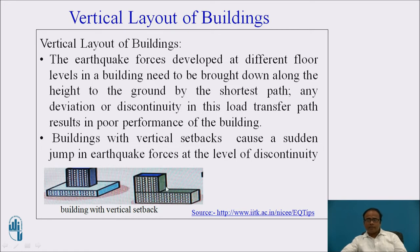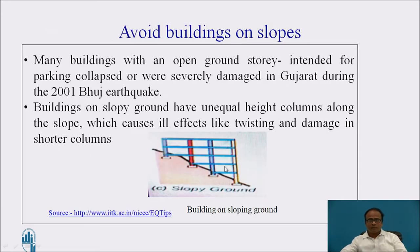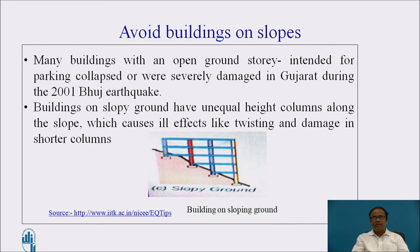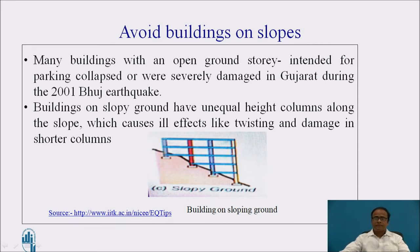Try to avoid these setbacks. Many buildings with an open ground story intended for parking collapsed or were severely damaged in Gujarat during the 2001 Bhuj earthquake. Buildings on sloping ground have unequal height columns along the slope, which causes ill effects like twisting and damage in shorter columns. You can see this case of a building on sloping ground — the height of the column changes at ground level, causing twisting and damage in shorter columns. So try to avoid constructing a building on sloping ground.